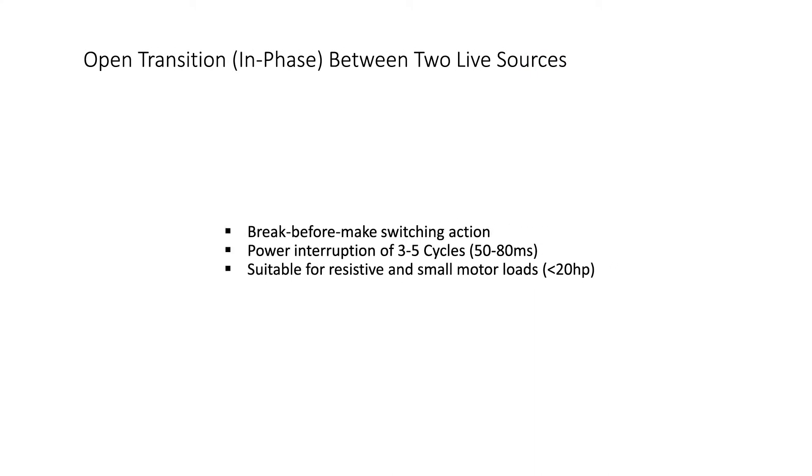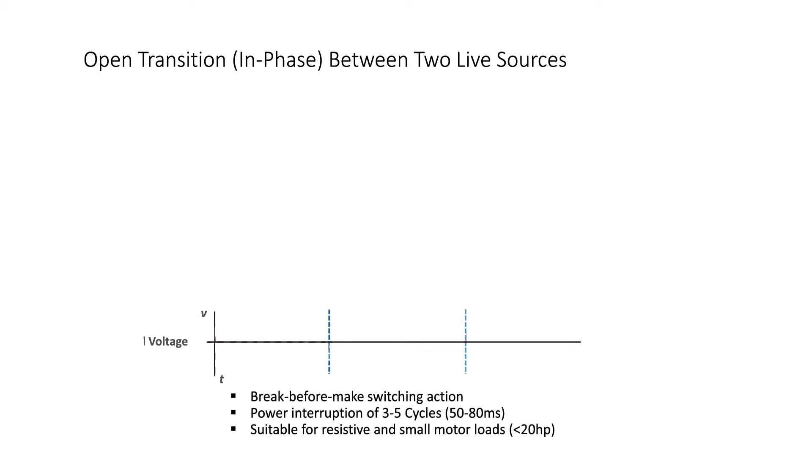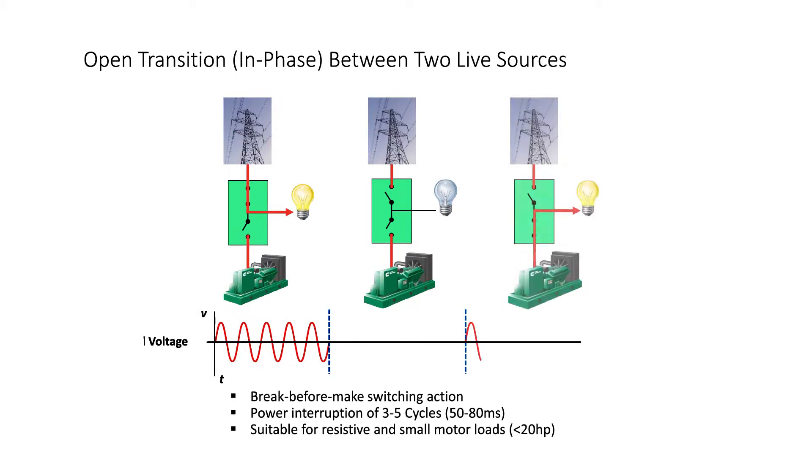In a simple open transition operation between two live sources, the connected loads experience power interruption for 50 to 80 milliseconds. This transition type is suitable for resistive and small motor loads less than 20 horsepower.